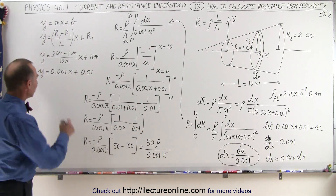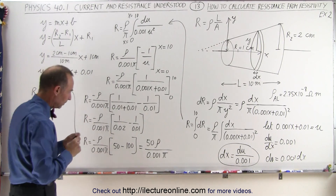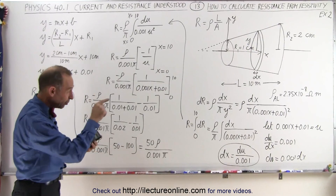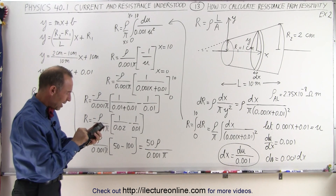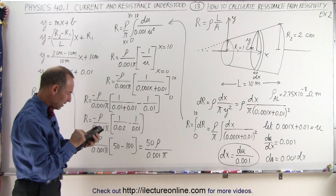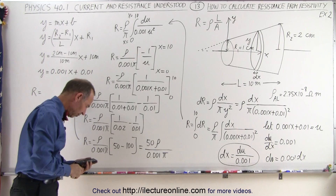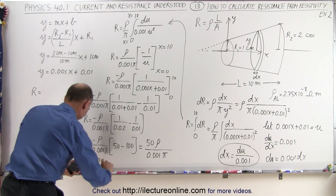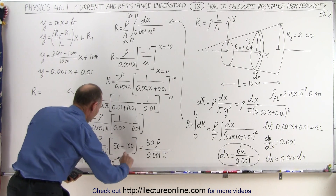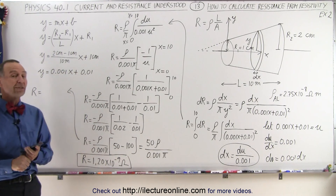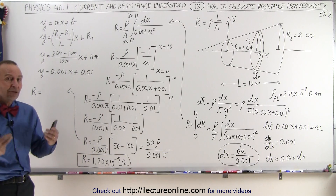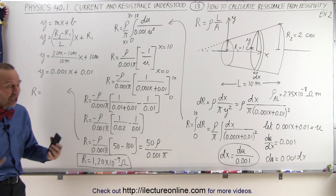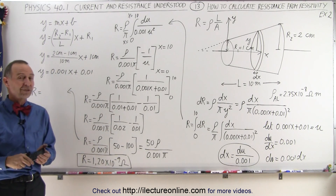Now we're ready to calculate the actual resistance. R equals 50 times 2.75×10⁻⁸ divided by 0.001 divided by π, and that gives us a resistance of 1.20 times 10 to the minus 9 ohms. That is how you find the resistance of an object with a particular resistivity when the object isn't a perfect cylinder or rectangular shape — if it has an odd shape where the cross-sectional area changes, you need to use an integration technique to find the correct answer.